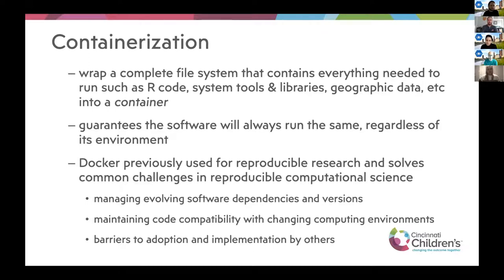DGAUSS works by containerization — wrapping the whole file system, including the operating system, the R code, and everything that R code requires to run, into its own little mini virtual computer. This guarantees the software will always run the same regardless of its environment. We use Docker, which helps manage evolving software dependencies and versions, and code compatibility with changing computing environments. This removes Windows versus Mac complications, and once Docker is installed, it's easy to use — you don't have to know R.